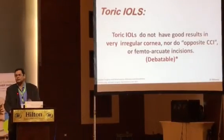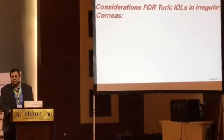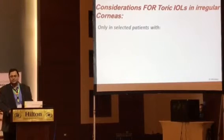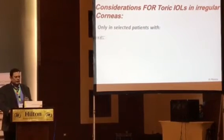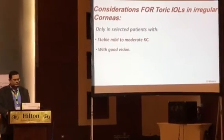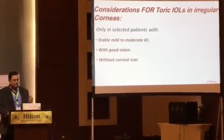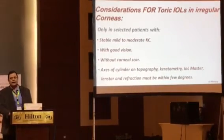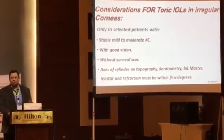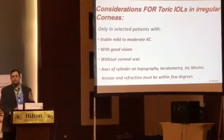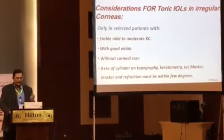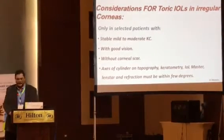However, this point is still debatable, because we have to have certain considerations for placing a toric IOL in irregular corneas. We have to highly select patients, have a stable mild or moderate cornea with good vision before surgery, and no corneal scar. The axis of the cylinder on topography, tomography, keratometry, IOLMaster, and other devices — all these K readings should agree within a few degrees before you trust these machines and place a toric IOL.